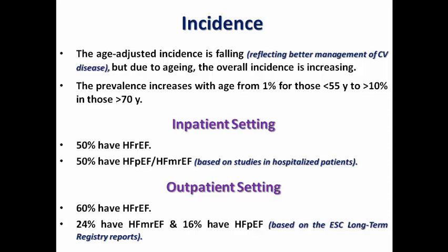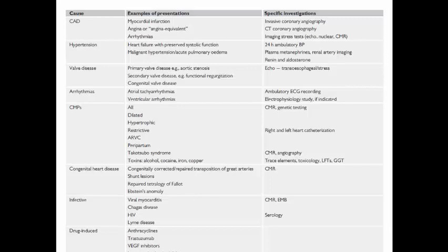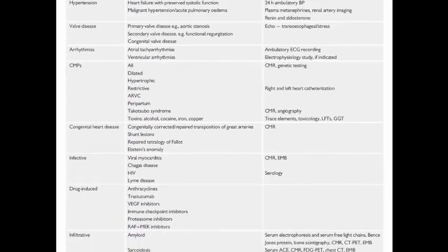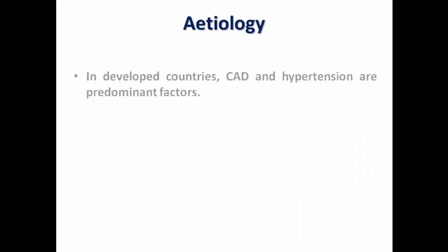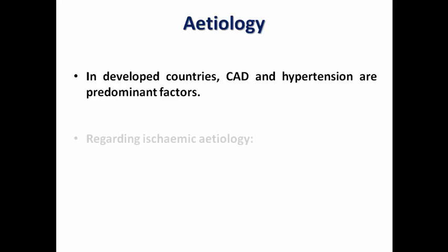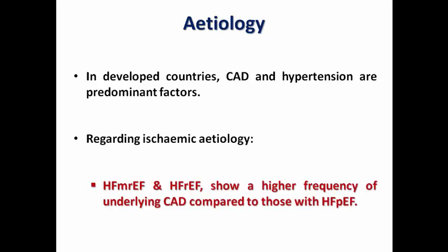A table covering etiologies of heart failure is present in the full text of the guidelines. It shows different causes across countries, but the most common causes in developed countries are coronary artery disease and hypertension. Regarding ischemic etiology, heart failure with mildly reduced and reduced ejection fraction show a higher frequency of underlying coronary artery disease compared to those with preserved ejection fraction.